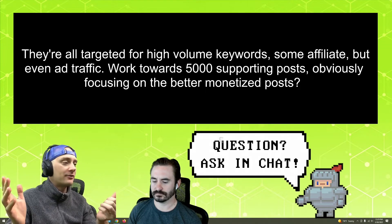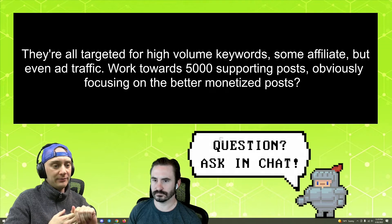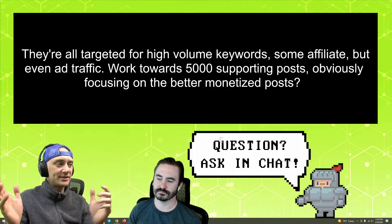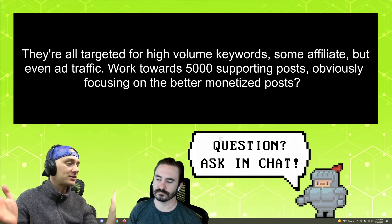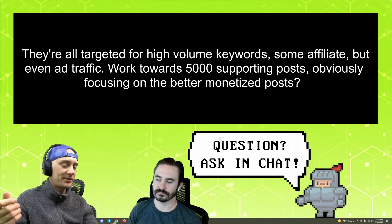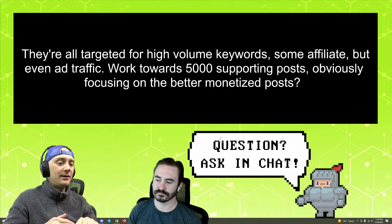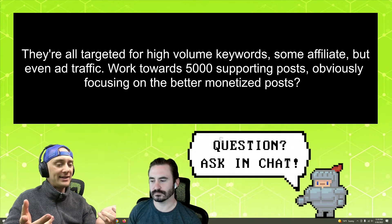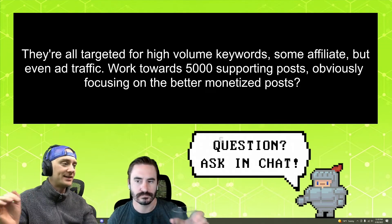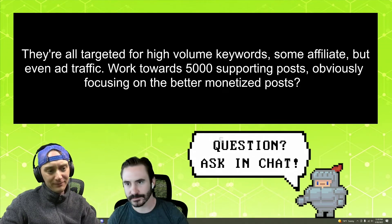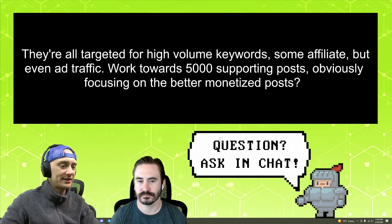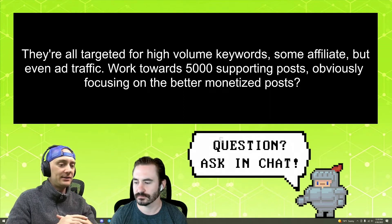The whole point of creating topical authority is just to basically show Google that you are an expert on a certain topic. So if you're talking about best protein powder or whatever, having a website that answers all these different kinds of questions that Google knows exist about protein powder — they say, okay, these guys are serious, they're covering everything about protein powder, and they reward you for that. The trick is to find the smaller stuff and use it as supporting content to link up to your bigger stuff. It can work on any kind of site — affiliate, local, whatever. It's always a valid strategy.